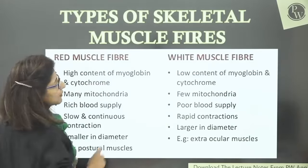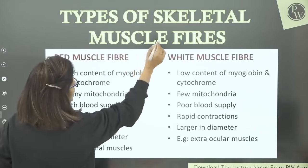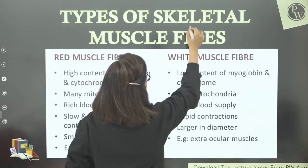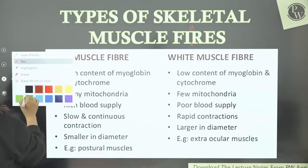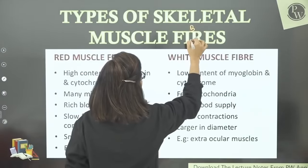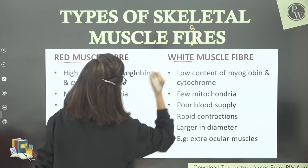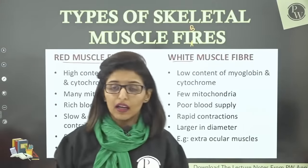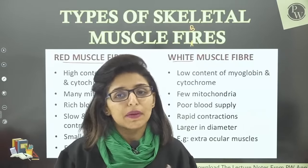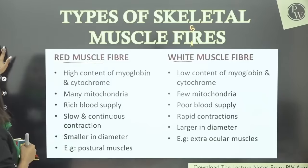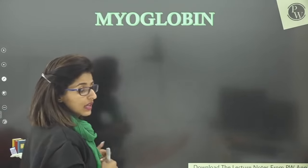One is your red muscle fibers and second is your white muscle fibers. The red and white color comes from a pigment present inside our skeletal muscles — and other muscles as well. That pigment is known as myoglobin. The word 'myo' means muscle. The study of muscles is known as myology. Muscles have a mesodermal origin. Myoglobin is a globular protein and pigment present inside muscles that stores oxygen.